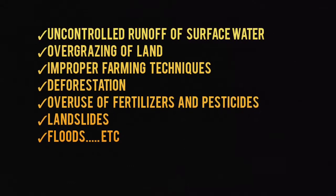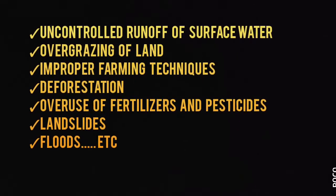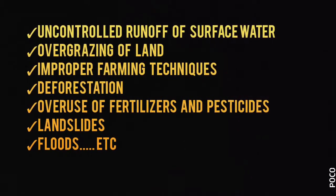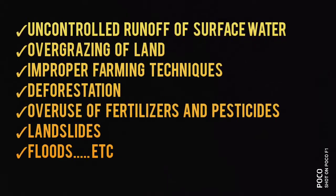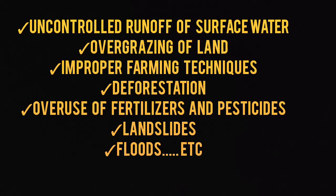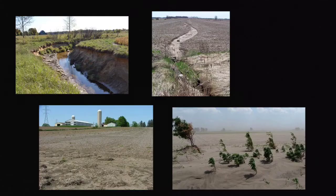There are a number of factors responsible for soil erosion: uncontrolled runoff of surface water, overgrazing of land, improper farming techniques, deforestation, excessive use of fertilizers and pesticides, landslides, floods, and human activities. All these factors result in soil erosion of different types.